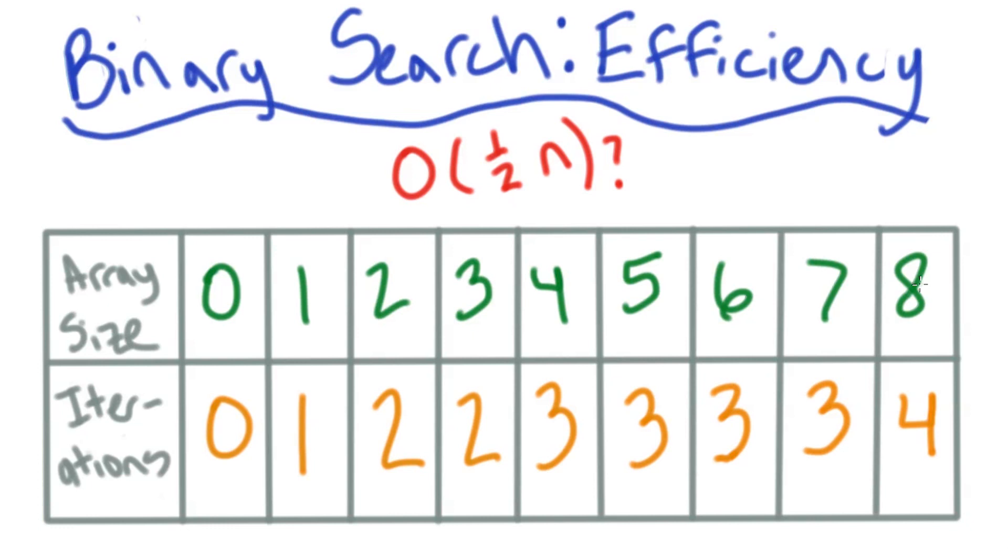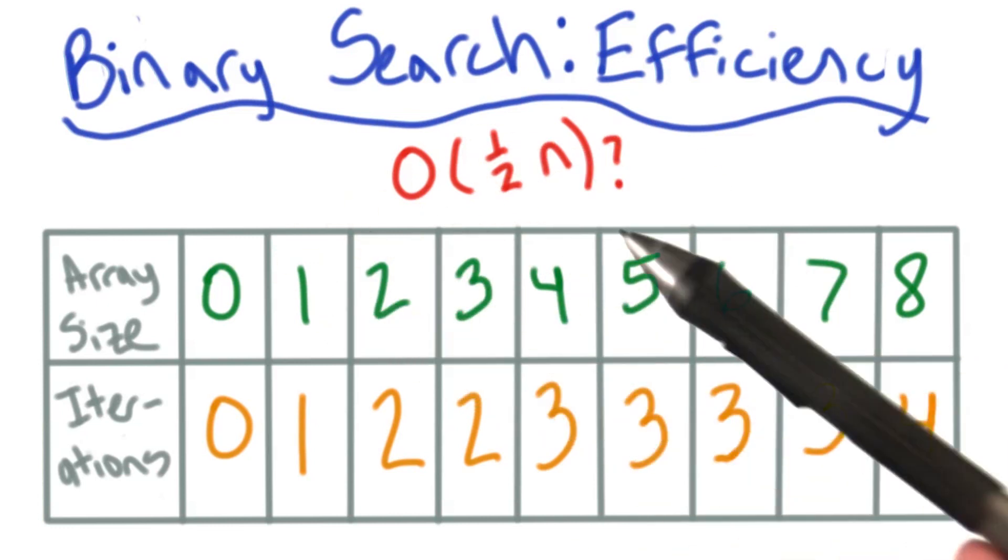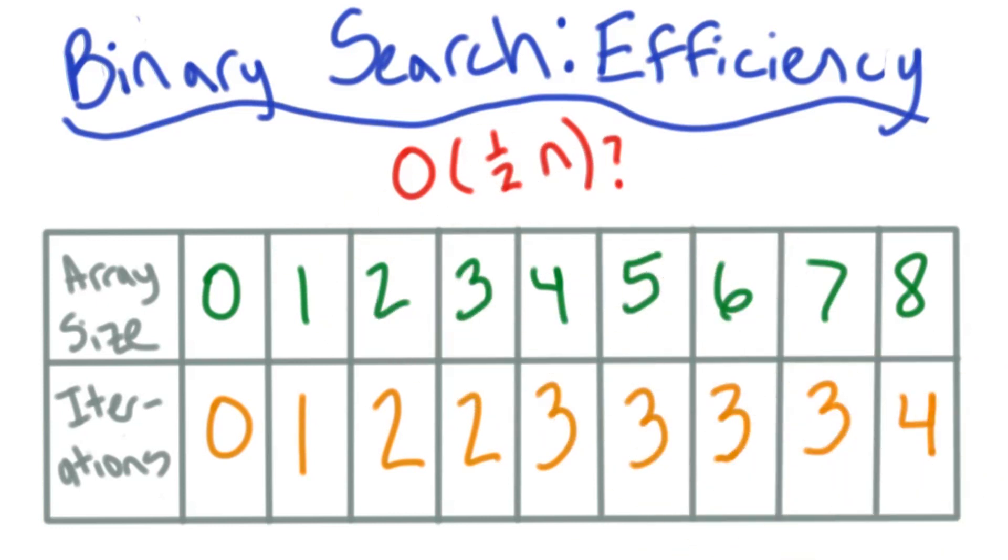Actually, I don't know that this is true, since half of 2 isn't 2 and half of 1 isn't 1. That's too bad. I really feel like 2 should go in this efficiency somewhere, since I have to cut the array in half every single time I run the algorithm.